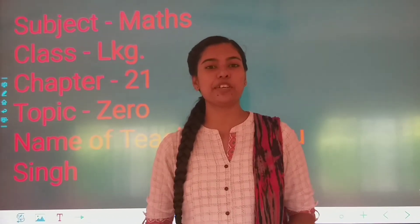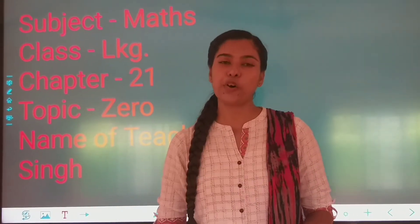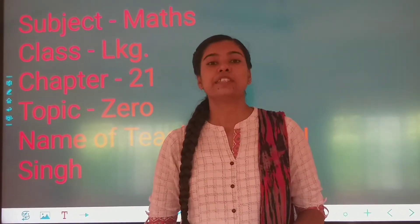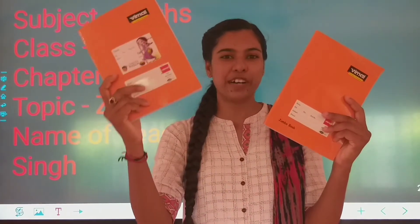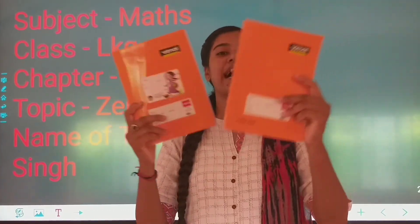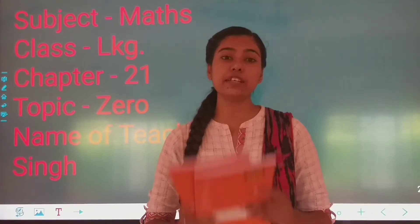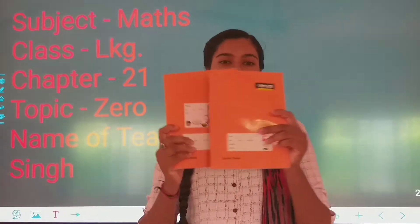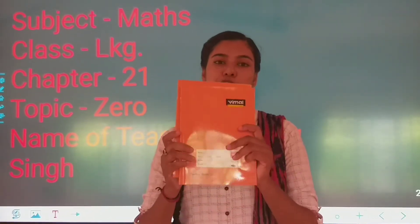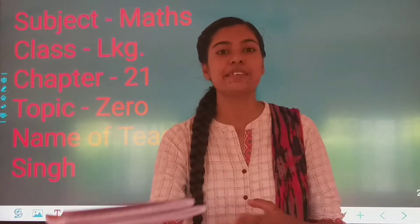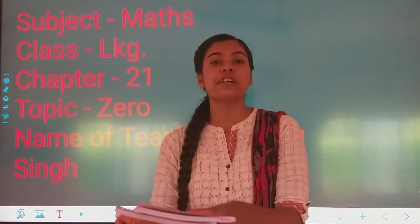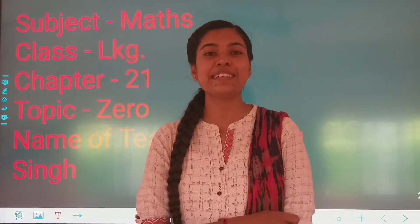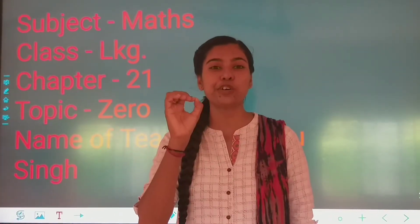Now I am giving you one more example. Tell me, how many books do I have? One and two — I am having two books. If I give these two books to Sagar, one and two, then how many books do I have? Tell me. Yes, zero.